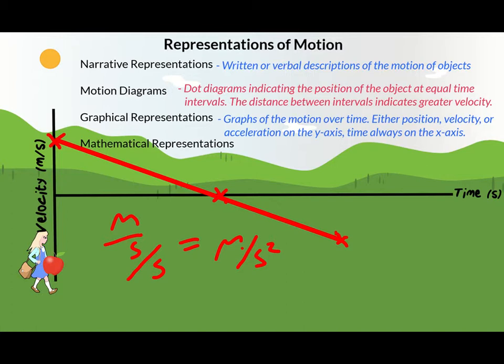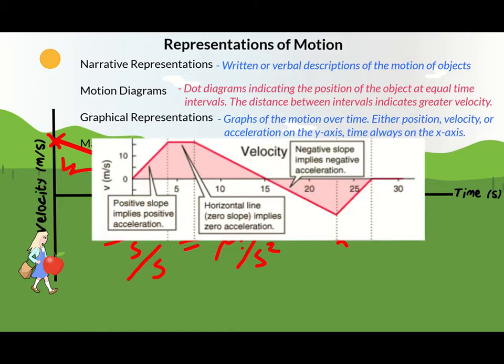Also, because the area under a VT graph gives us displacement, and this apple goes up and back down to the same height at which it started, the areas under each section of this VT graph should be equal. So a velocity-time graph tells us quite a bit of information about the motion of an object.